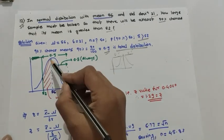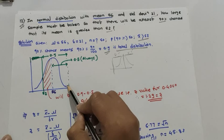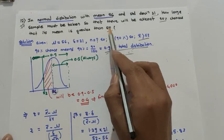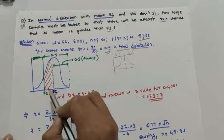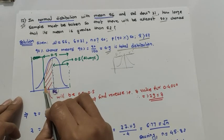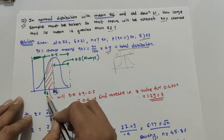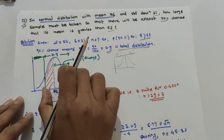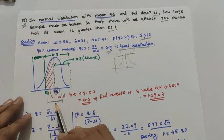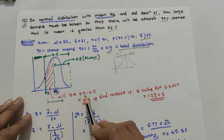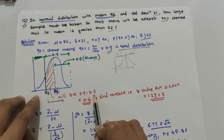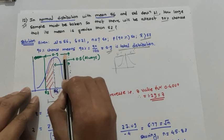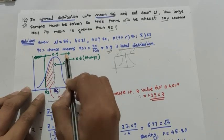We draw the normal distribution with mean 56. They are asking the sample mean should be greater than 52. The value 52 lies to the left side of 56. The total probability from 52 onwards to the right is 0.9, as given in the example.